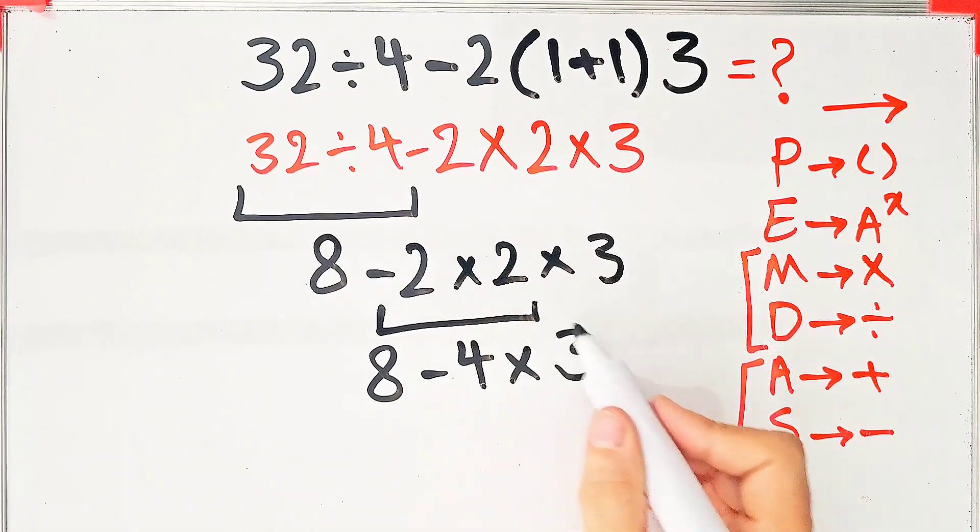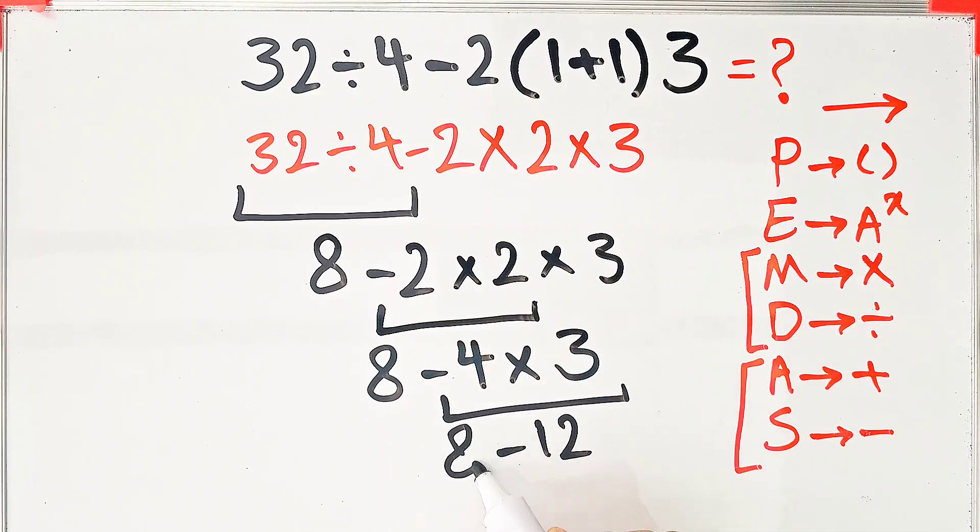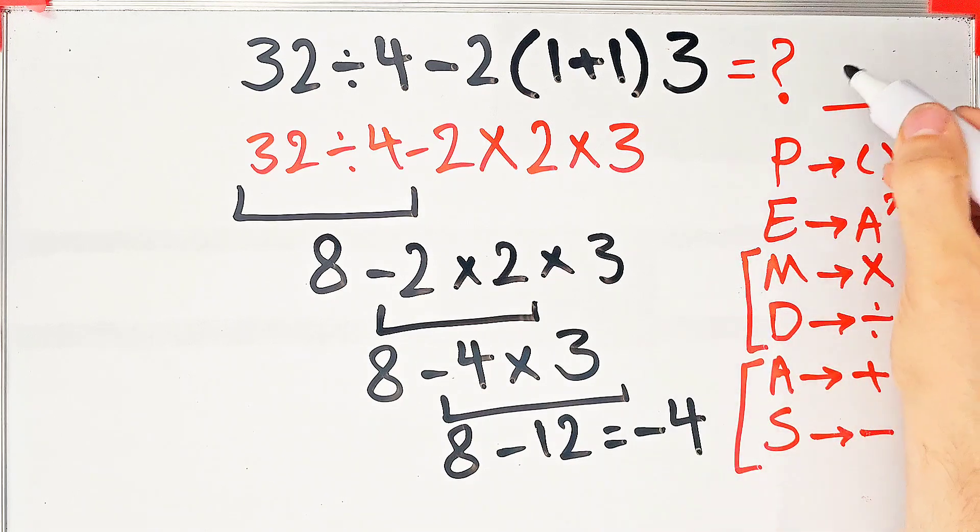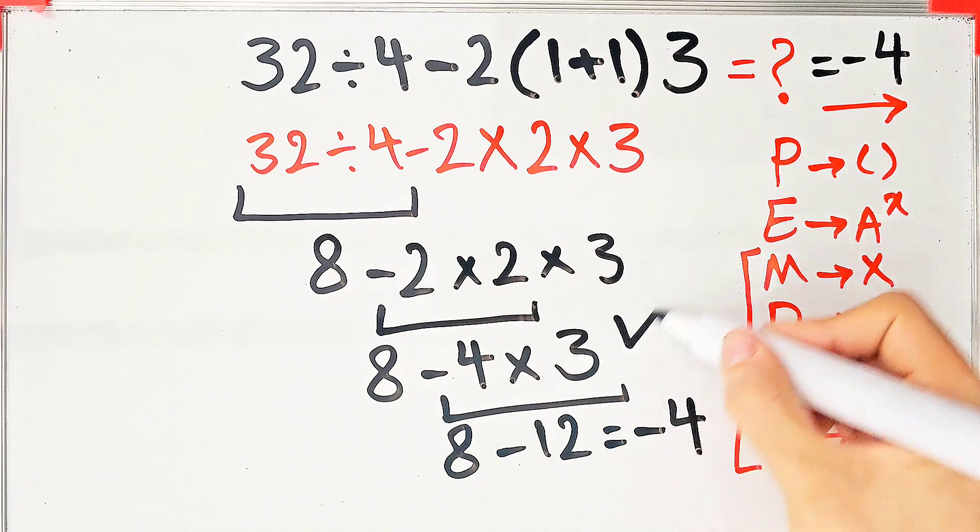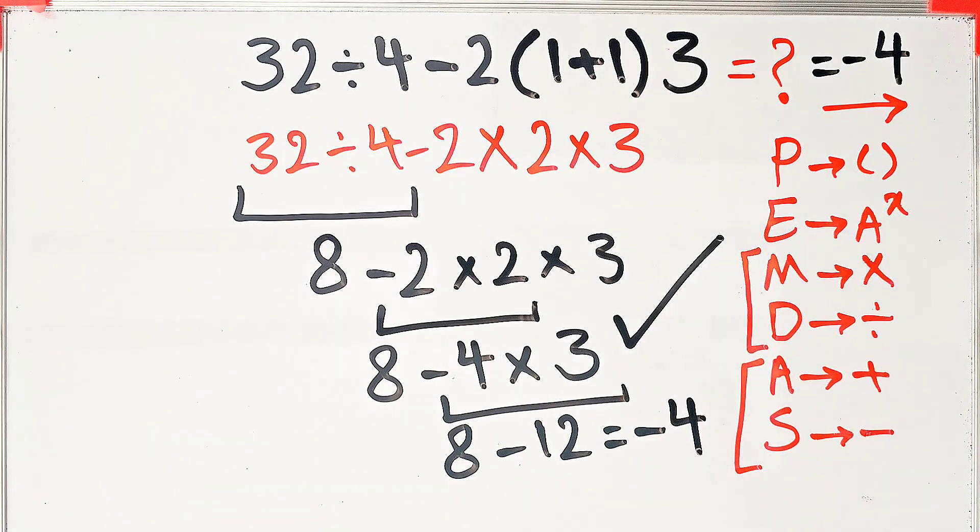Again, we do this multiplication. 4 times 3 equals 12. Now we have 8 minus 12, which equals negative 4. The final answer of this question equals negative 4. Thanks for watching guys. To see more math videos, subscribe to the channel.